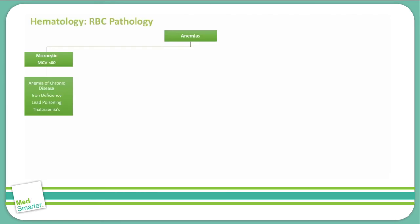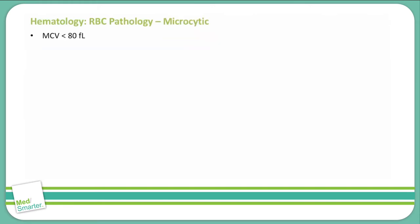Welcome back. Today we're going to take a deeper look into the microcytic anemias. First and foremost, as we have discussed, microcytic anemias have a mean corpuscular volume, or MCV, that is less than 80 femtoliters.